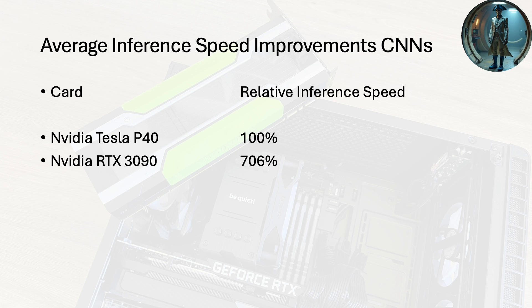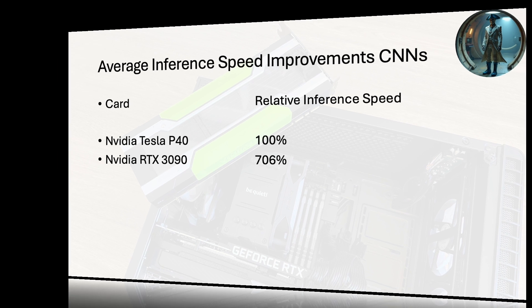The Flux model takes much longer in inference time than Stable Diffusion, but the 3090 is still faster with Flux than the P40 is with Stable Diffusion at around the same resolution. And Flux really does create much better pictures.